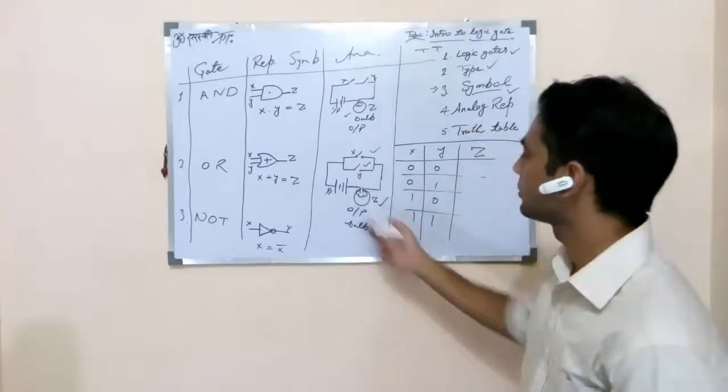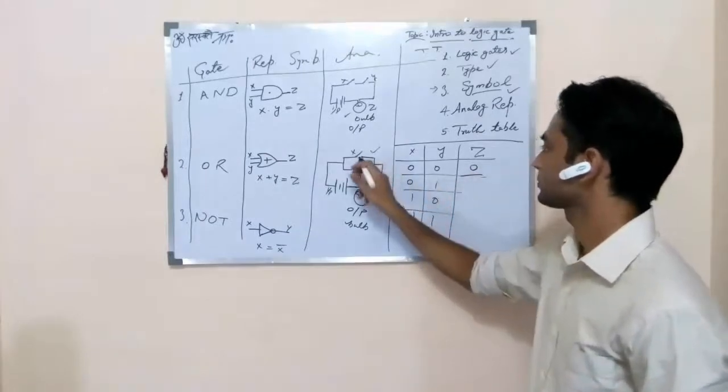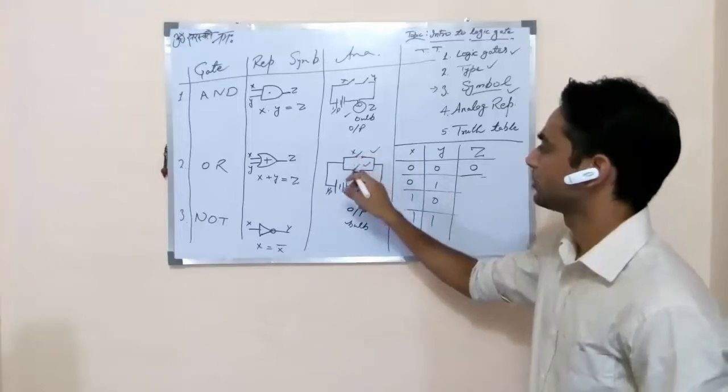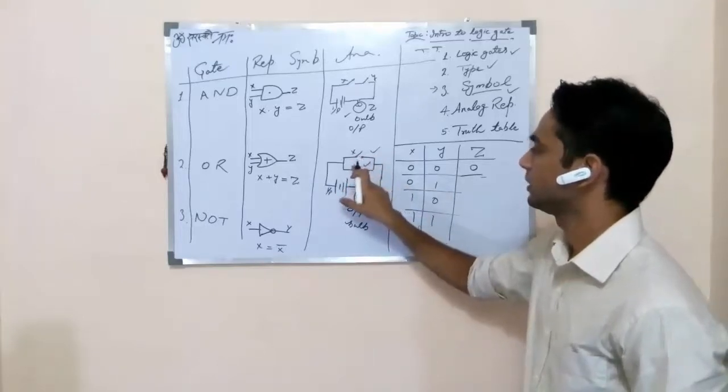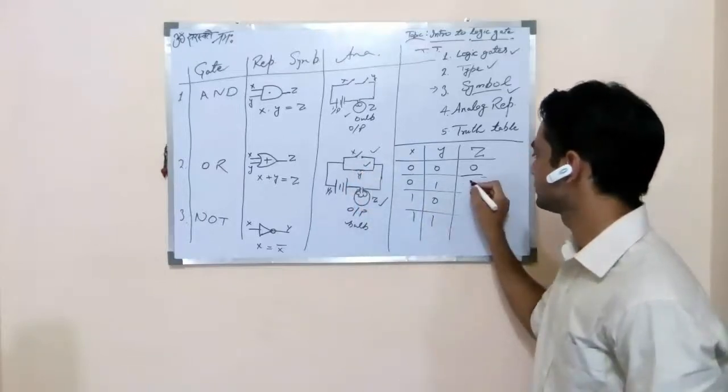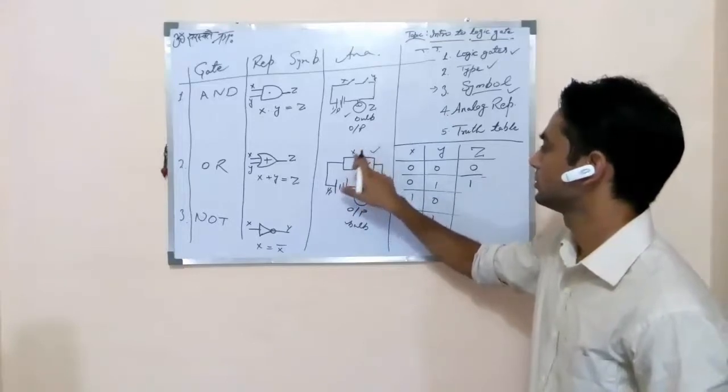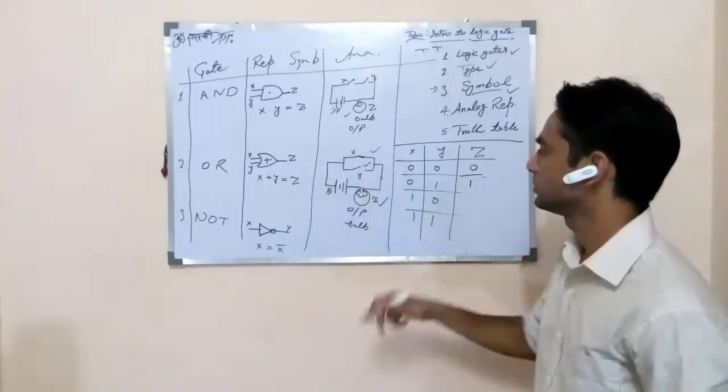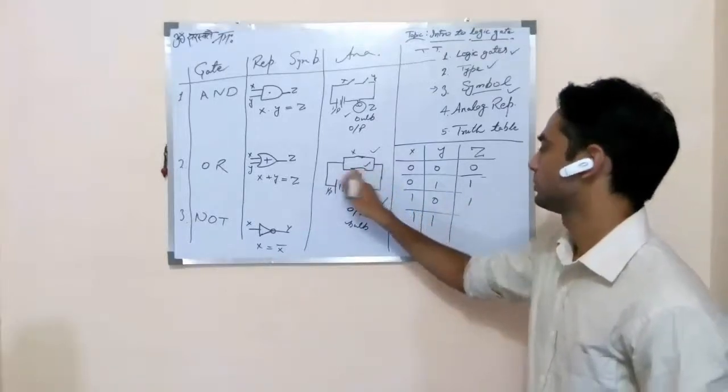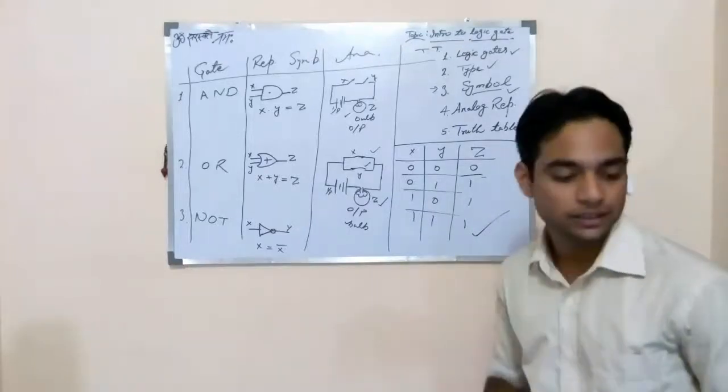So only one condition when both buttons are not in connection, at that time, bulb does not glow. That is, X is 0 and Y is 1. Like this. Then bulb glows. X is 0. Sorry, X is 1. Y is 0. Then bulb glows. If both are connected, then bulb glows. This is the truth table of OR gate. And yes.